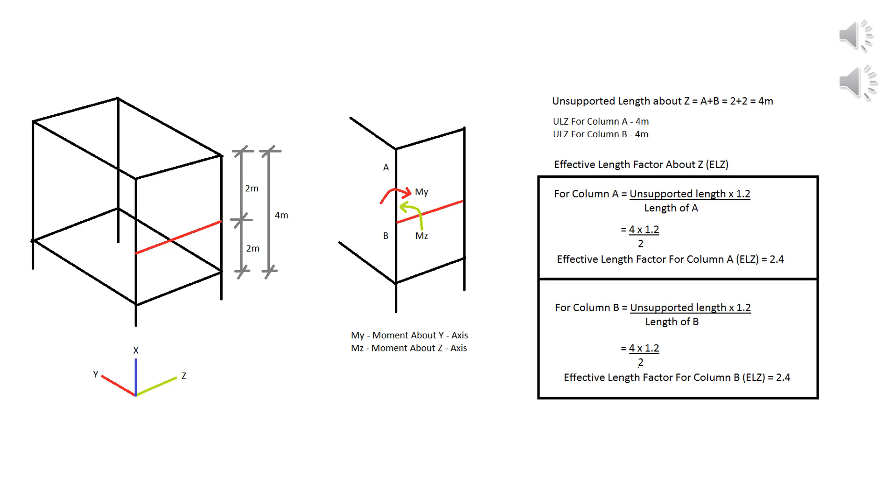About z-axis, the unsupported length is 4 meter, that is length of column A plus length of column B, because there is no intermediate beam, hence there is no restraint. So total unsupported length of column is 4 meter.